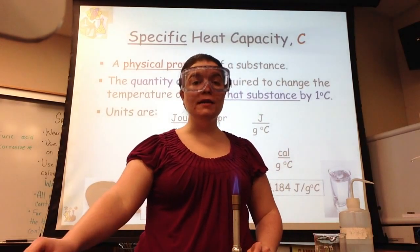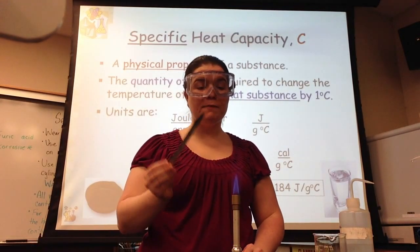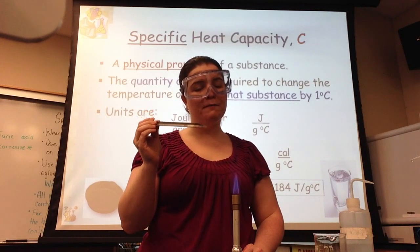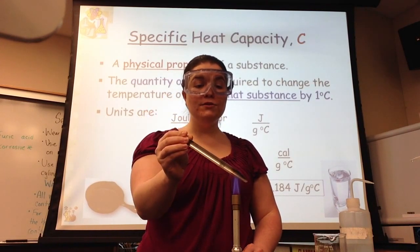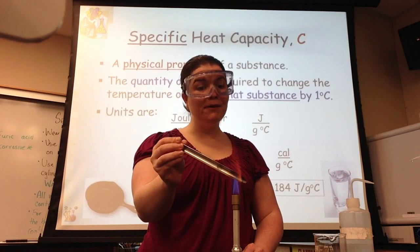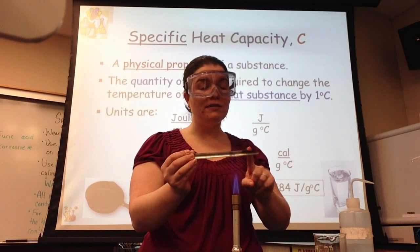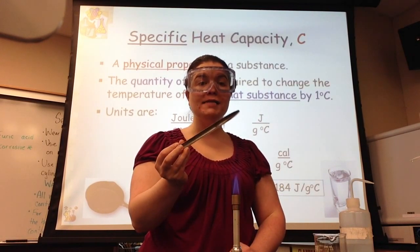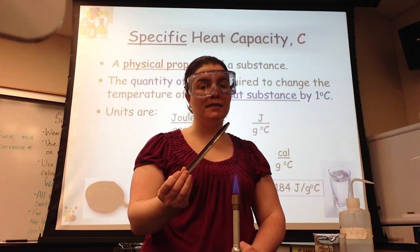On the other hand, if I take a metal, like iron, that has a low specific heat capacity, and I hold this in the Bunsen burner flame for 5 seconds, 1, 2, 3, 4, 5, I know from experience that this is very hot, and I don't want to touch it. Because a small amount of heat energy will raise the temperature of a metal, which has a low specific heat capacity.